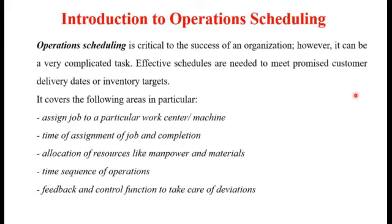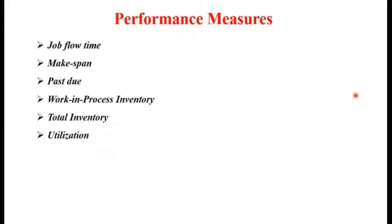In order to avoid Deviations in Production or Delivery Time, the Feedback and Control Function is very important, and Operation Scheduling helps in this area. Performance Measure is one of the more important tasks in Operation Scheduling. It is basically measured in terms of Job Flow Time, Make Span, Past Due, Work in Process Inventory, Total Inventory, and Utilization.